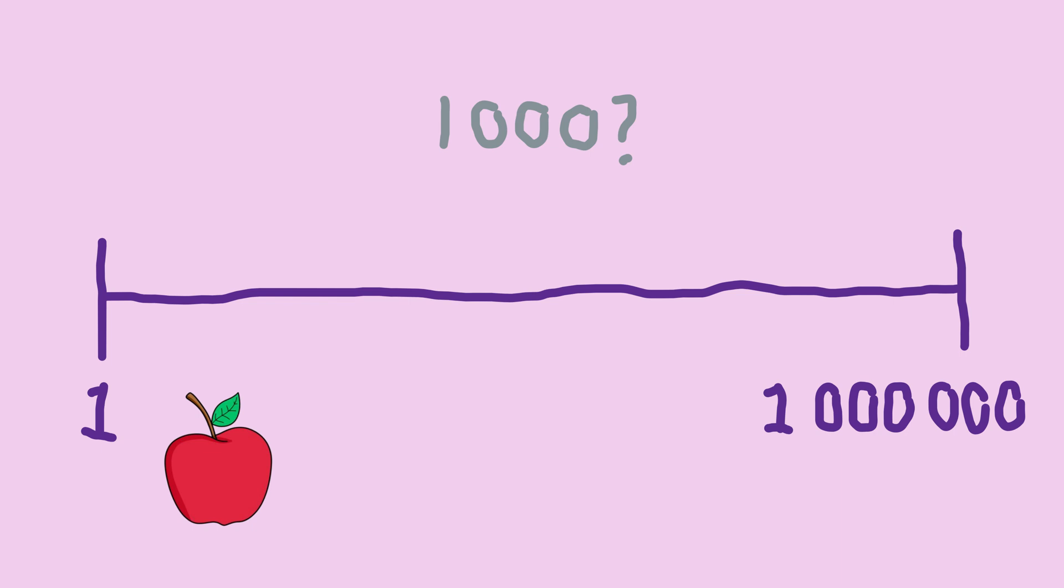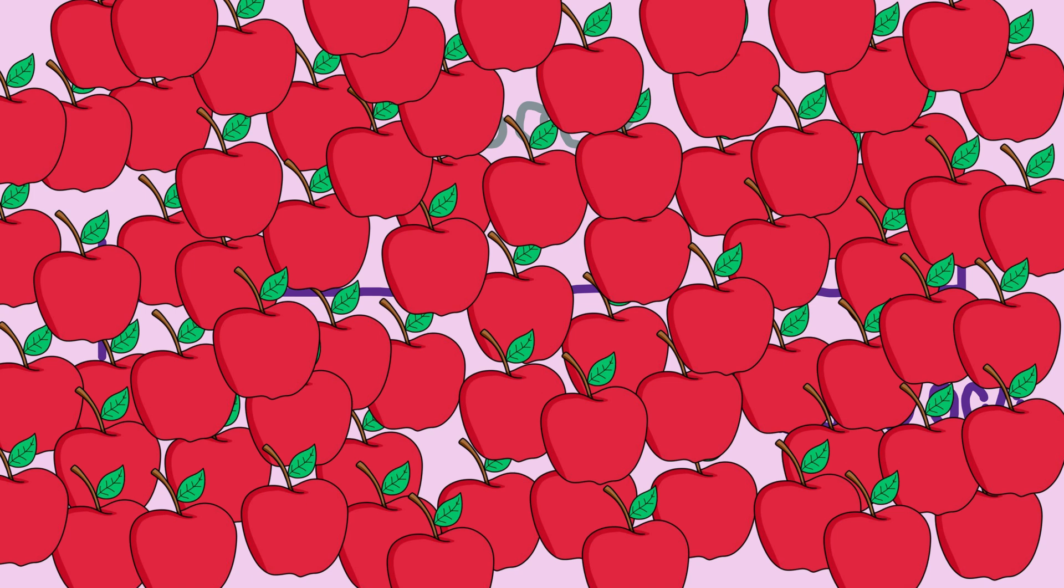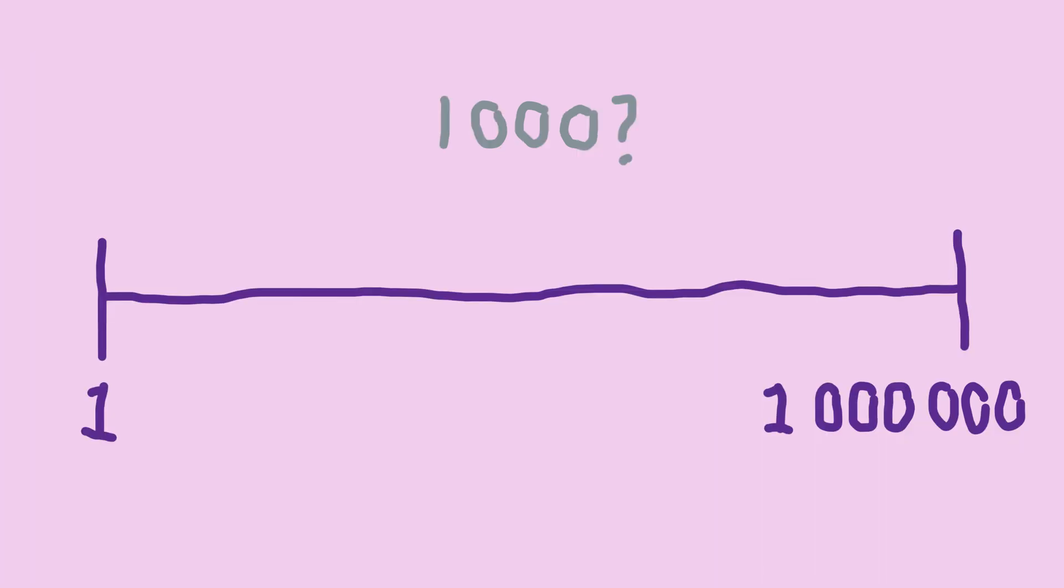Imagine you had one thing, and then you had 10 more things. That feels like a big jump. But say you had 50 gazillion things, and then you had 10 more things. That feels like a pretty small jump. The same thing applies to our number line, just less extreme.